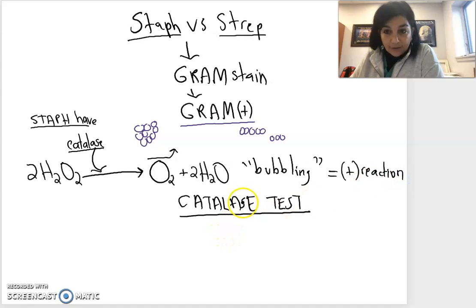If we have a catalase test and we get bubbles, that means we have a positive reaction so we determine that we have staph. If we do not see bubbles then we do not have staph, so we have a strep if we're trying to identify between the two. That's the catalase test.